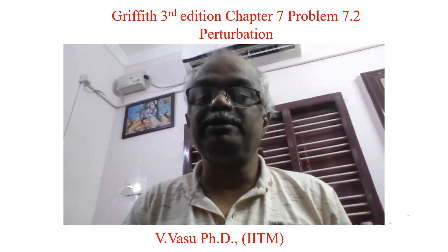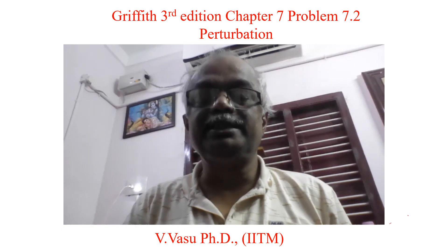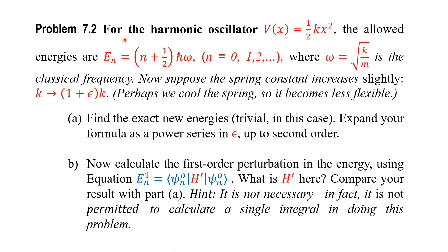Today we will find the solution of Problem 7.2 in Chapter 7, Griffith 3rd edition. This is also related to perturbation theory. For the harmonic oscillator, V(x) = ½Kx². The allowed energies are E = (N + ½)ℏω, where N = 0, 1, 2, 3... and ω = √(K/M) is the classical frequency. Now suppose the spring constant increases slightly, that is K → (1 + ε)K, where ε is a very small value.